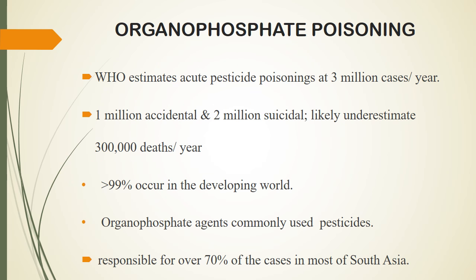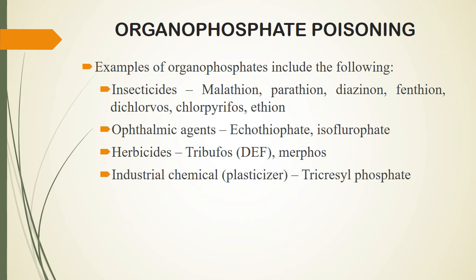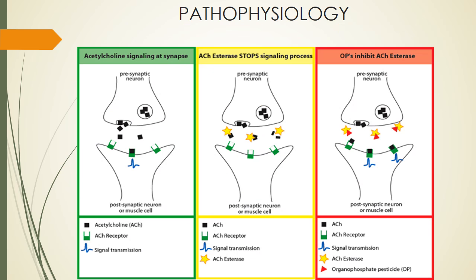Next is organophosphate poisoning. The WHO estimates that almost 3 million cases occur per year — 1 million accidental and 2 million suicidal — with more than 99% occurring in developing nations. Organophosphate agents commonly used are pesticides, responsible for about 70% of cases. Examples include insecticides, ophthalmic agents, herbicides, industrial chemicals, and other compounds.